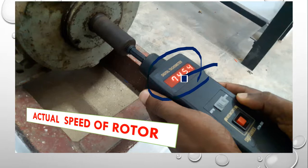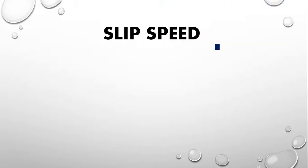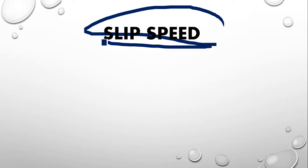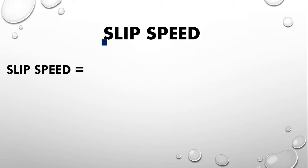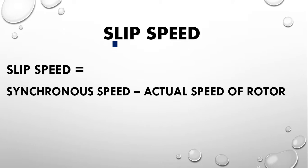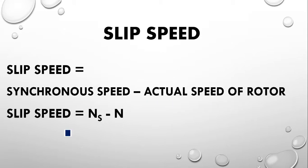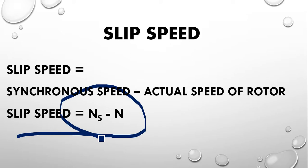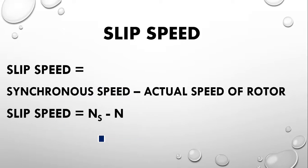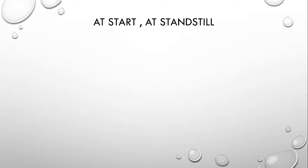From the synchronous speed and actual speed, we define slip speed. Please note it is not slip — it is slip speed. Slip speed is the difference between synchronous speed and actual speed: slip speed = N_s − N.